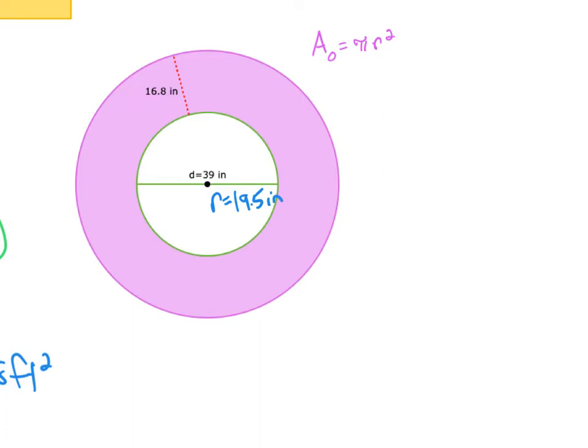So if that's 19.5, I need to figure out my big radius from the center. These two circles share the same center. So I can add this. So the big radius here is going to be 19.5 plus 16.8, which equals 36.3 inches. So this right here is 36.3 inches.